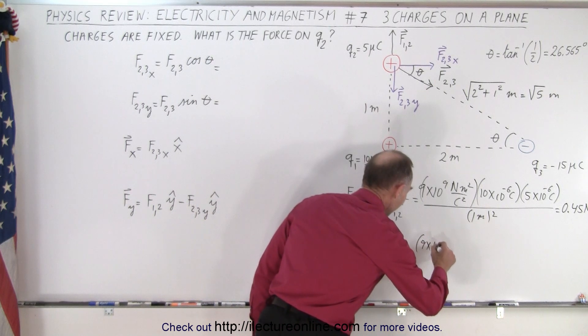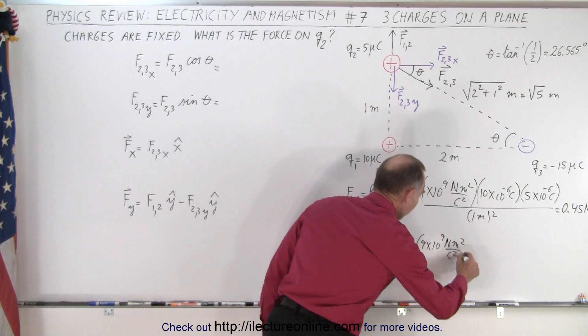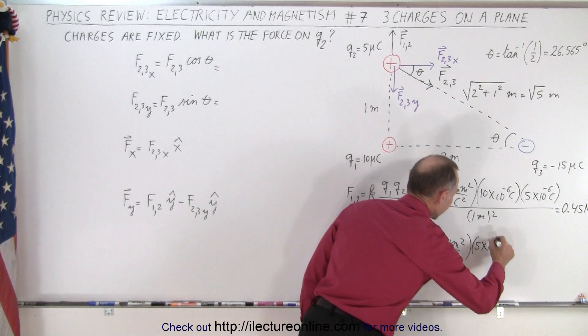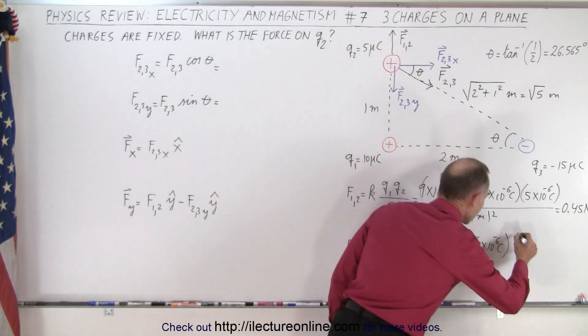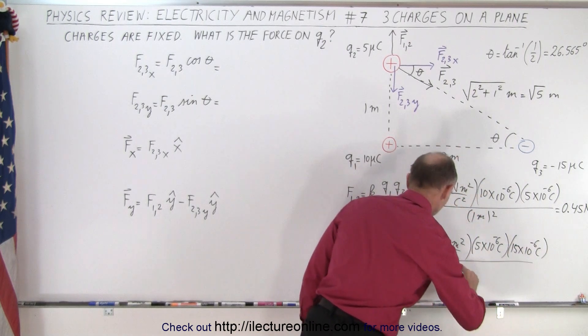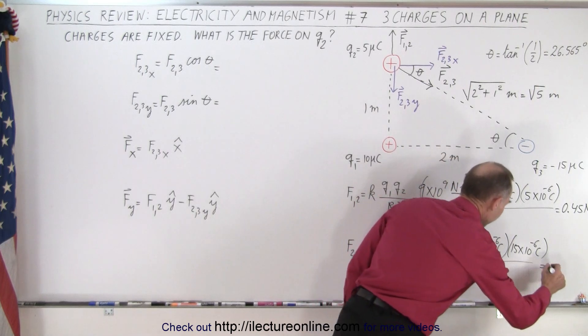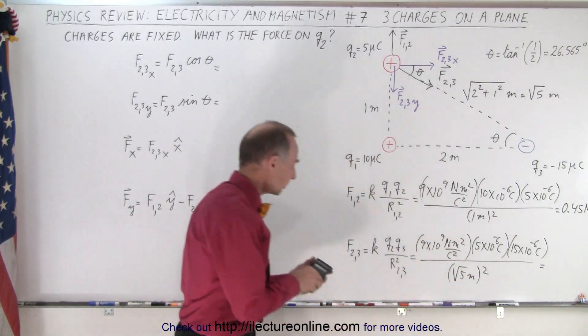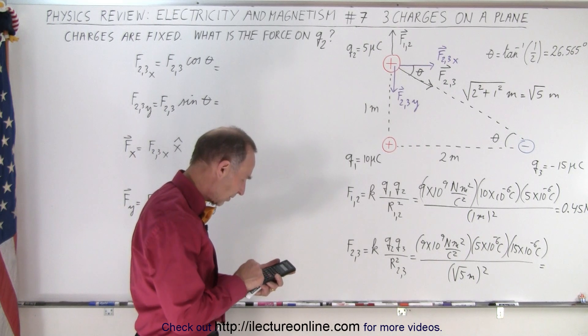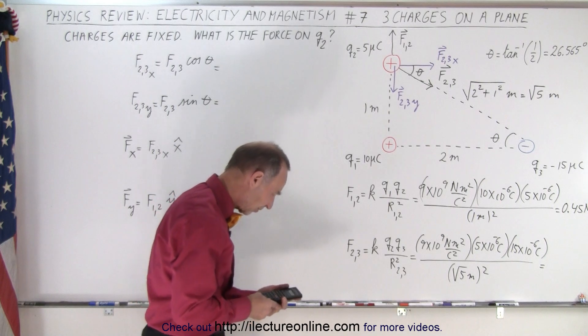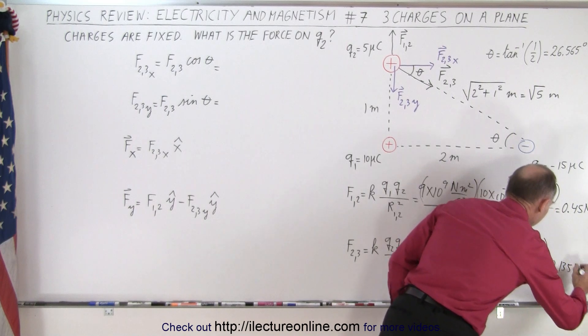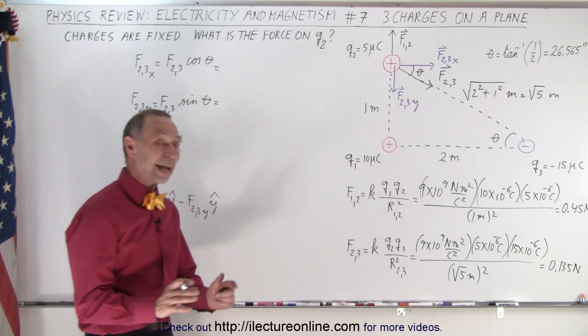So we have 9 times 10 to the 9th newtons meters squared per coulombs squared. Q2 is 5 microcoulombs, 5 times 10 to the minus 6 coulombs, and Q3 is 15 times 10 to the minus 6 coulombs, and the whole thing divided by the square root of 5 meters squared. So I have 9e to the 9th times 5e to the 6th minus times 15e to the 6th minus divided by 5 equals, and we get 0.135 newtons, and again, the units cancel out just the newtons. So now we have the magnitude of those two.